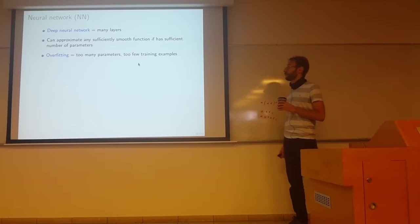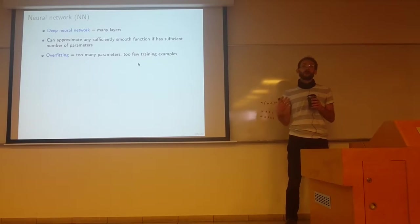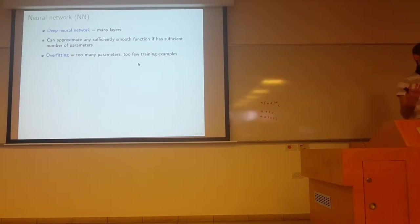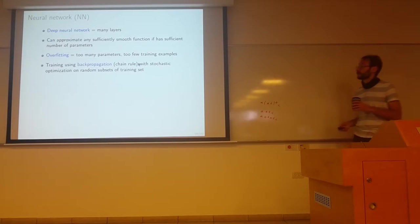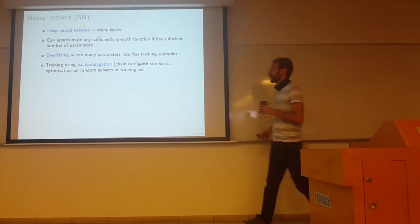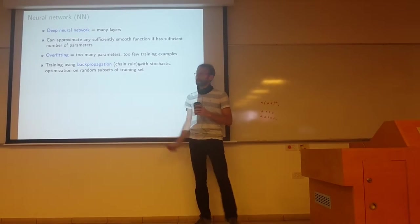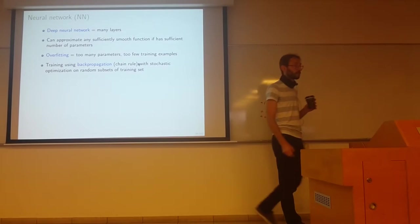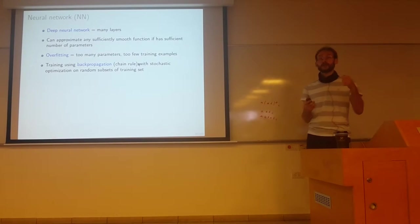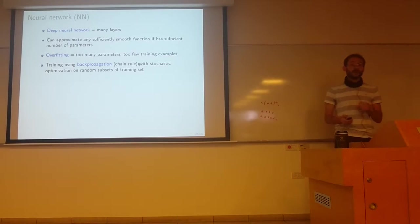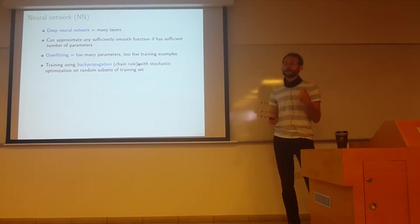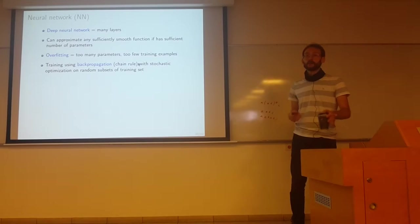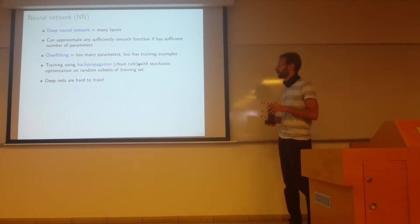The phenomenon of overfitting: if you have too many parameters and too few training examples, you'll learn a function that fits well to the data but doesn't generalize to unseen data. Training is usually done using backpropagation, which is just the chain rule, using stochastic optimization algorithms. As you remember, the cost function consists of a sum of cost functions applied to training samples. Usually you approximate it stochastically by sampling a random subset of the training set to reduce computational complexity.